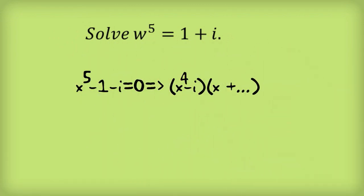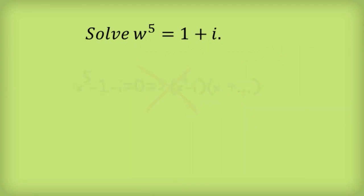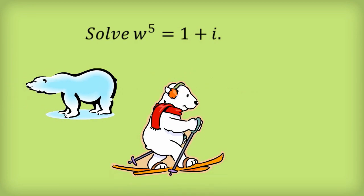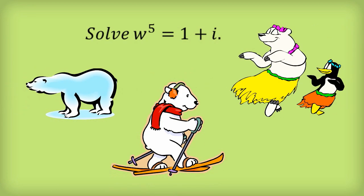Firstly, don't even think about trying to factor this like you would a quadratic — that's going to get you nowhere. The way to solve these is to think of a polar bear. In fact, think of a lot of polar bears. Because what we're going to do is convert this complex number, 1 plus i, into polar form.